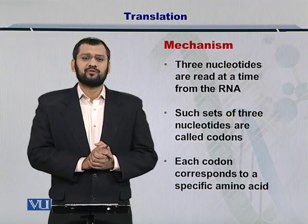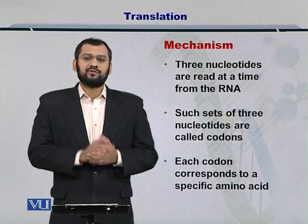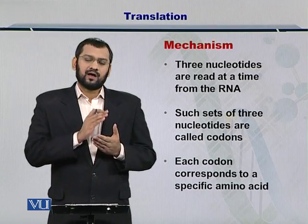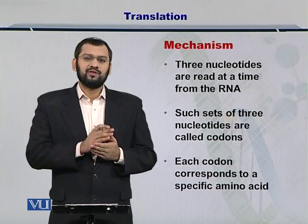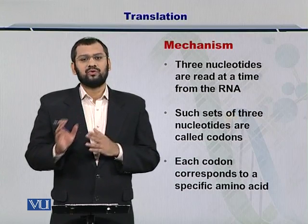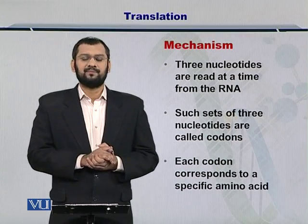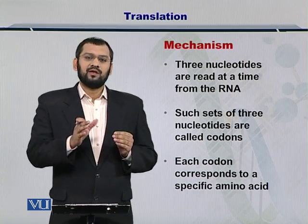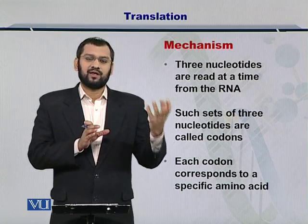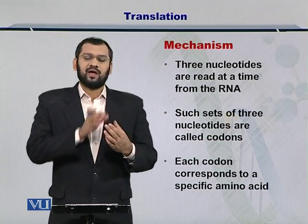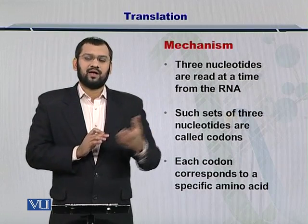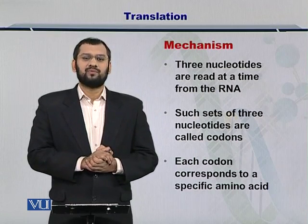The mechanism of the process of translation is described as follows. As a first step, the RNA molecule is read three nucleotides at a time, and these three nucleotides encode a specific amino acid. Then the next three nucleotides are processed, resulting in the coding for another amino acid. This process continues until the end of the RNA molecule, and as a result you have the amino acid sequence.